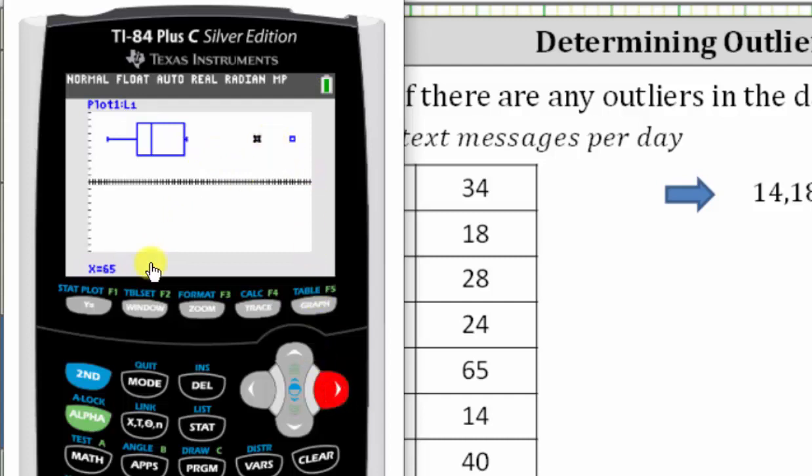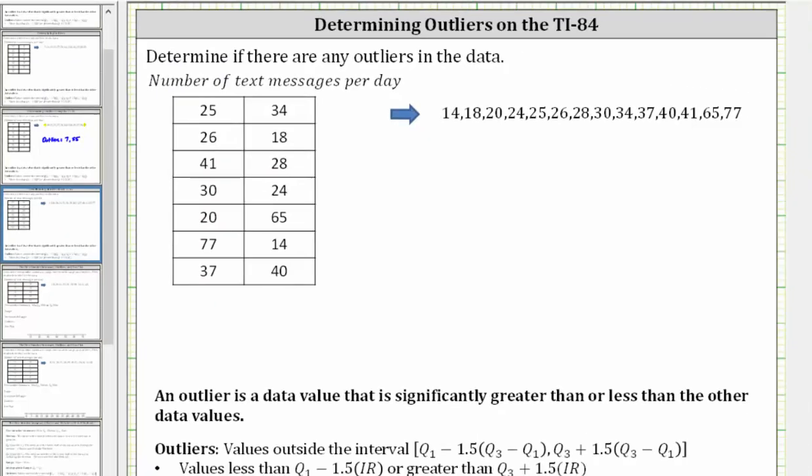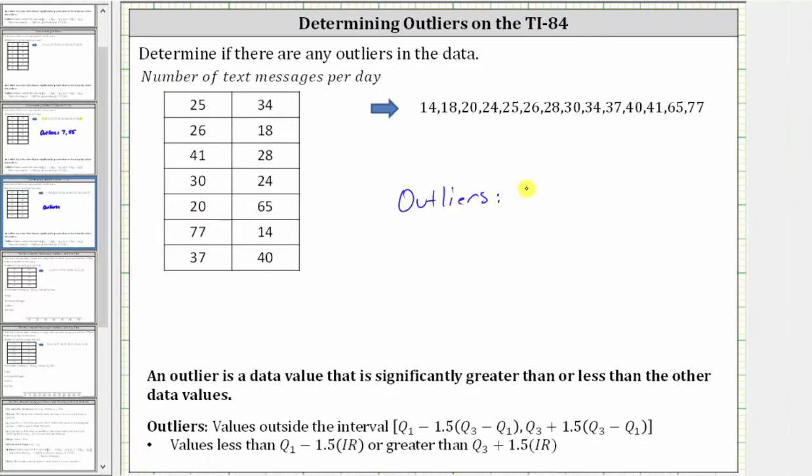Right arrow again gives us the first outlier of 65, right arrow again gives us the second outlier of 77. So we have two outliers, 65 and 77. 65 and 77 are considered significantly greater than the rest of the data values. I hope you found this helpful.